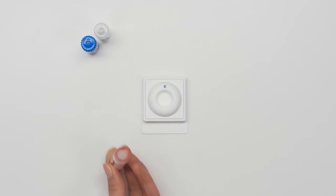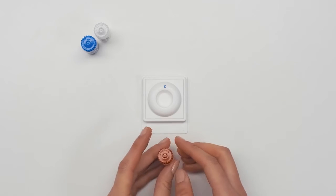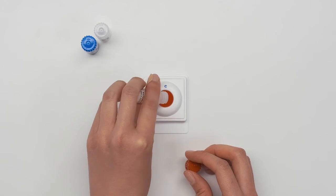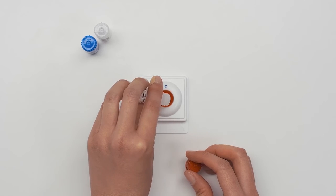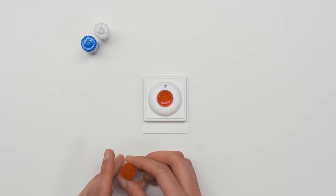Shake bottle 1 four times and pour all of the liquid into the test device. Wait until the liquid disappears.